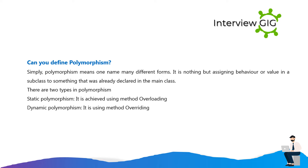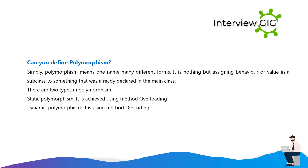Can you define polymorphism? Simply, polymorphism means one name, many different forms. It is nothing but assigning behavior or value in a subclass to something that was already declared in the main class. There are two types of polymorphism: static polymorphism, achieved using method overloading; and dynamic polymorphism, achieved using method overriding.